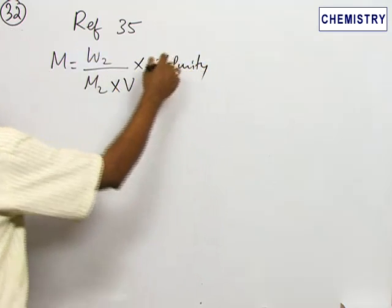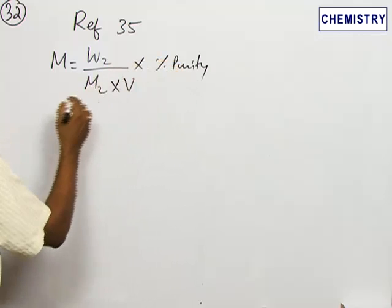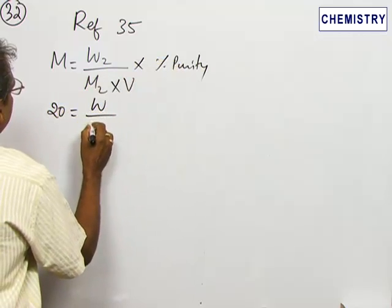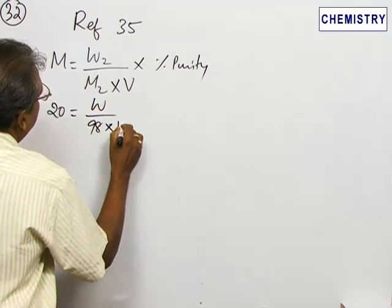We have to refer to the problem. The percentage purity is given, so that value we have to substitute. Here it is given 20, 20 is equal to W, we have to calculate W by M2, 98 in sulfuric acid 98, and 1 liter is the volume.